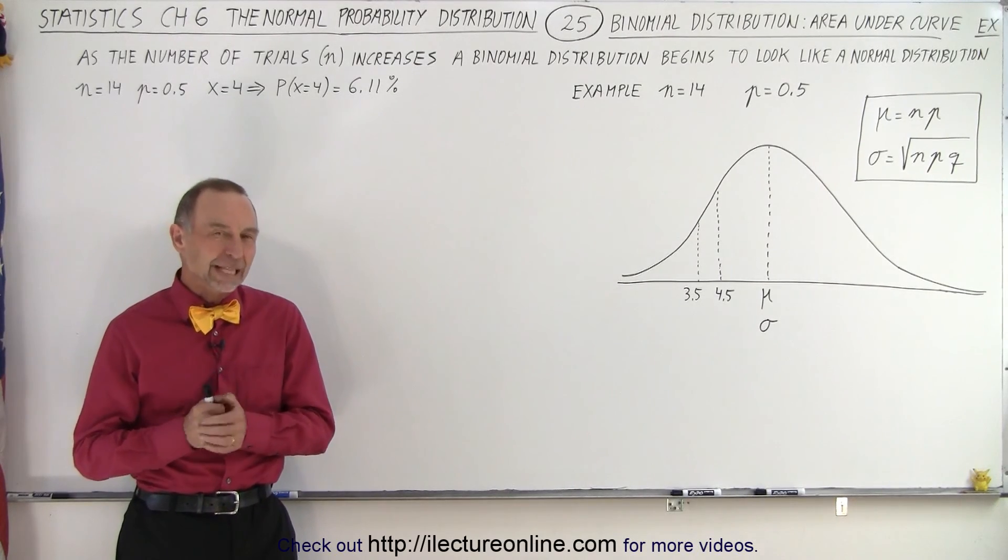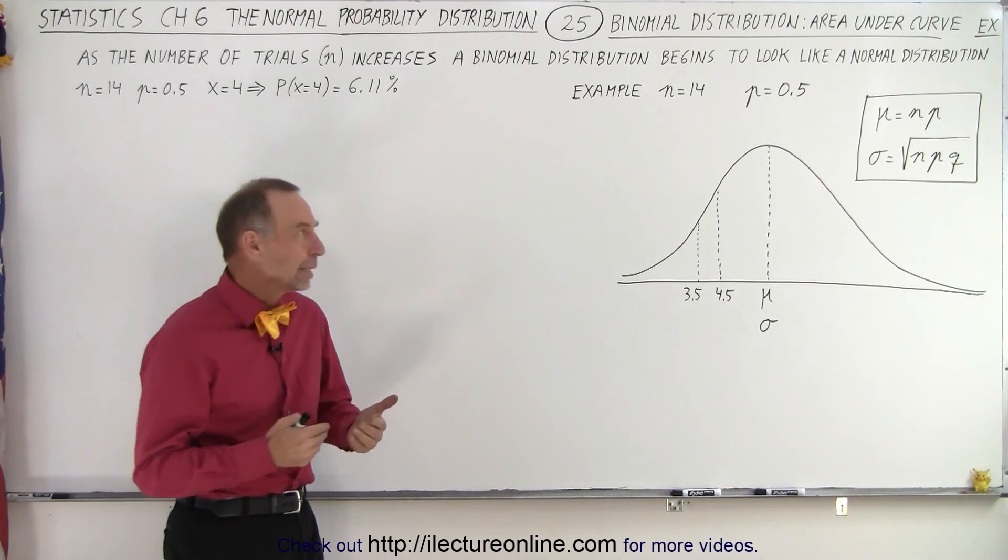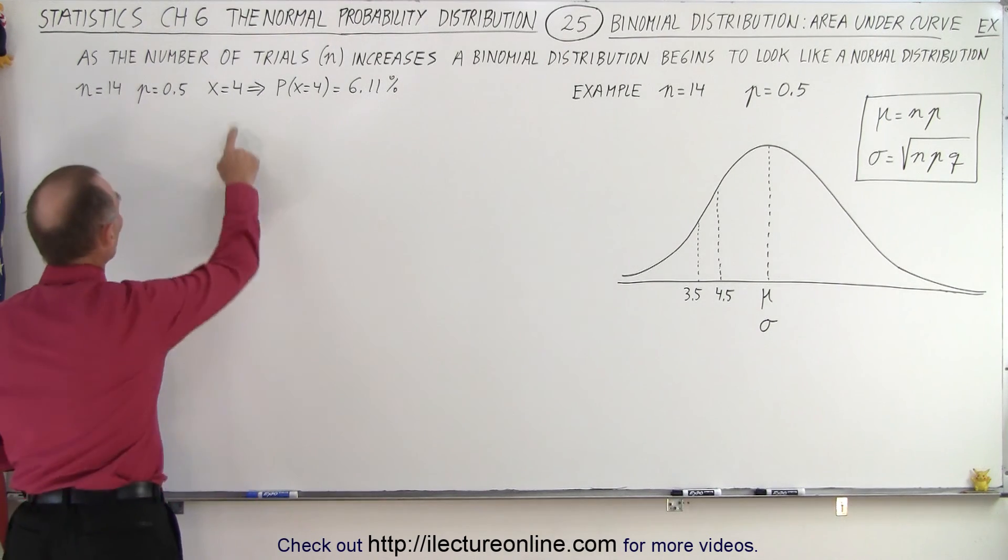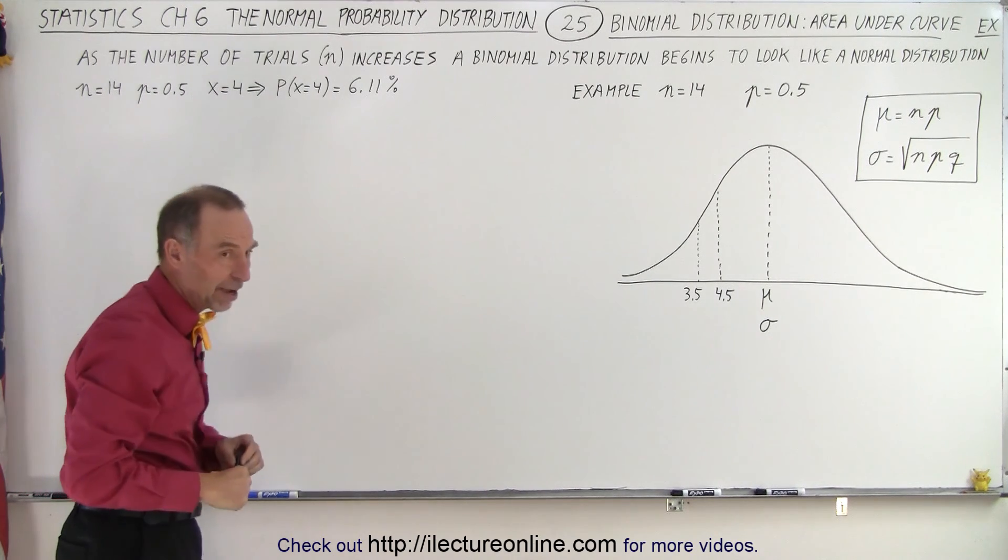Welcome to our lecture online. In the previous video we calculated the probability that the outcome will be equal to 4 when we had the number of trials being 14 and the probability of success being 0.5.